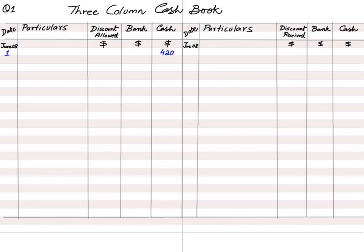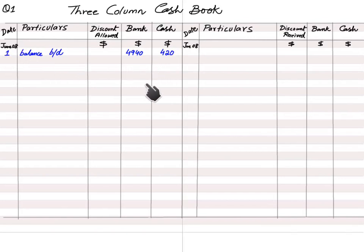On the 1st of June, the opening balance brought forward is: cash 420 and bank 4940, referenced as 'Balance b/d.' The next transaction: 'the following paid us by check, deducting a 5% cash discount.' These are our customers — debtors — paying us. When cash or bank comes into the business, it is debited; when it goes out, it is credited.